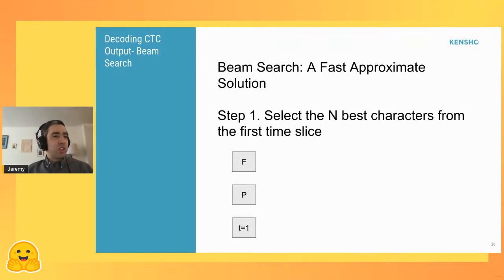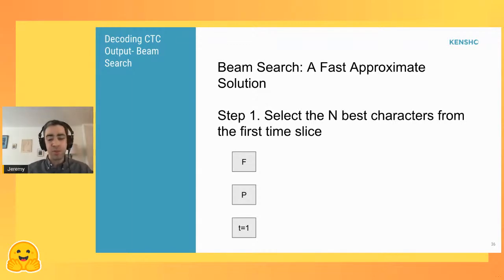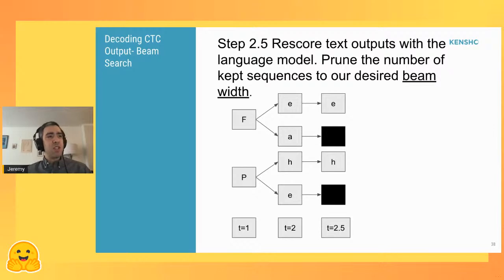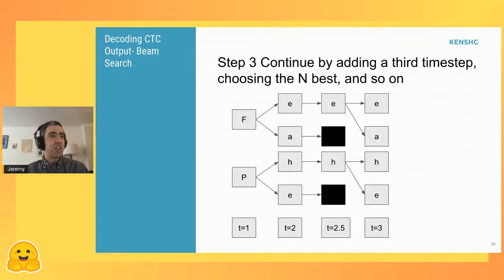Beam search gives us a fast approximate solution. The idea is that we take the n best characters from our first time slice — we have n beams that we want to start with. Let's say we start with the letters F and P for our first time step. Then we go to the next time step and try to add a second character to each of our initial beams, score these, then prune the number of sequences down to our desired beam width n. We continue this through each of our time steps.